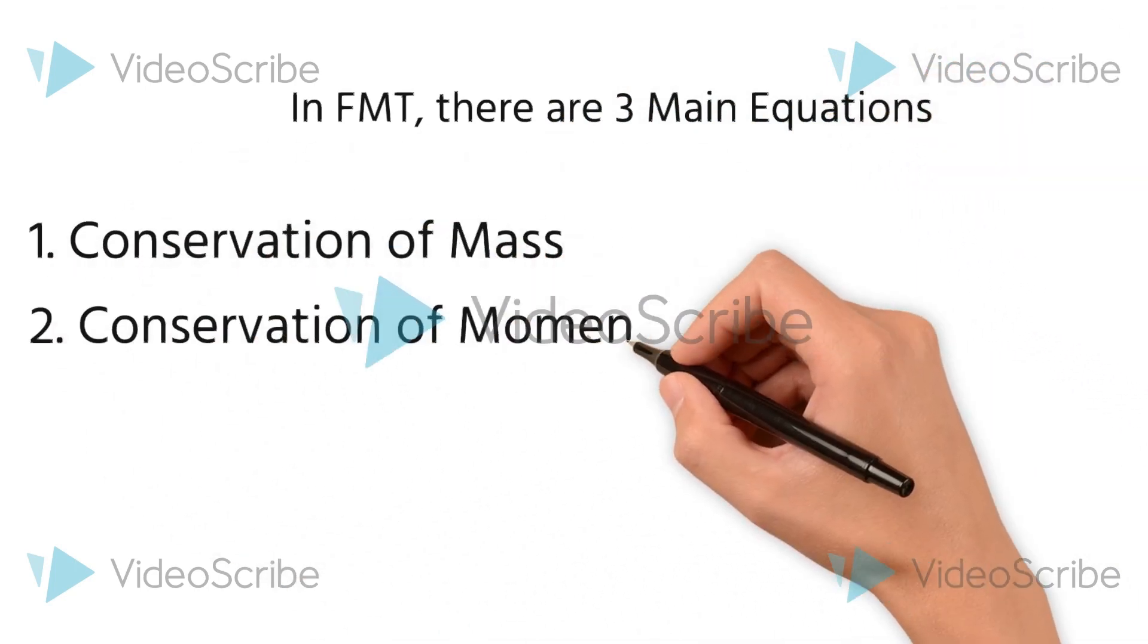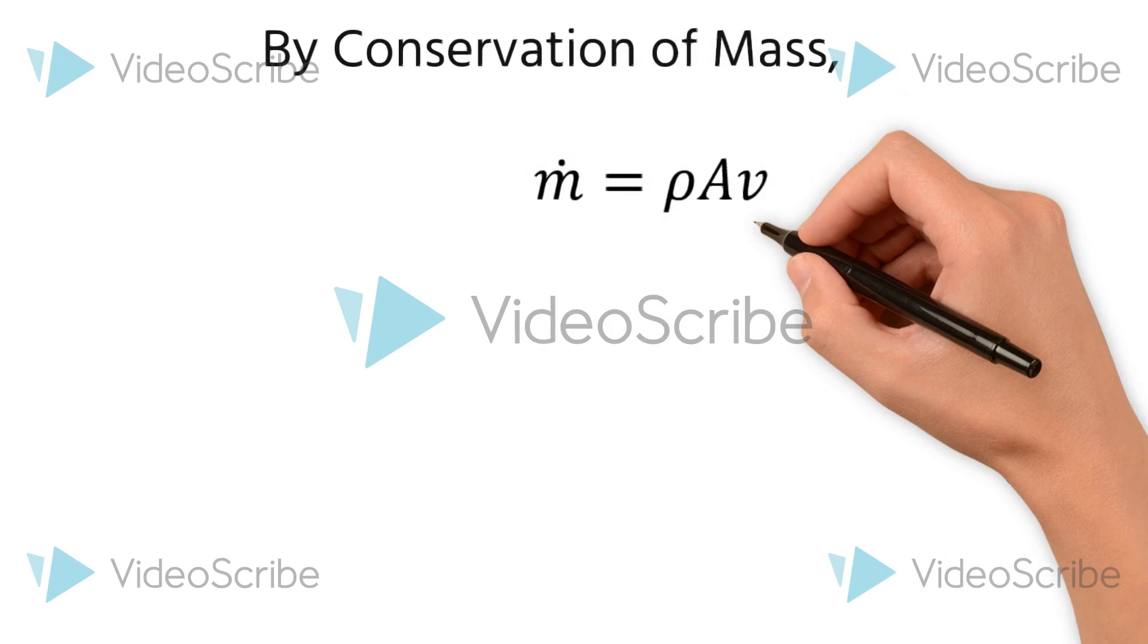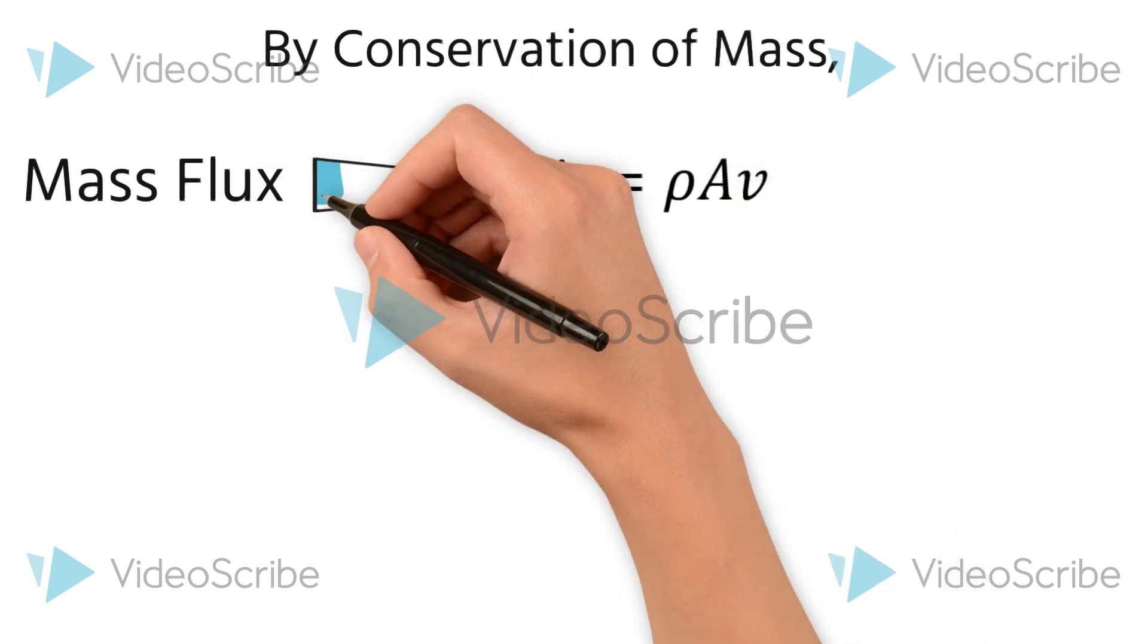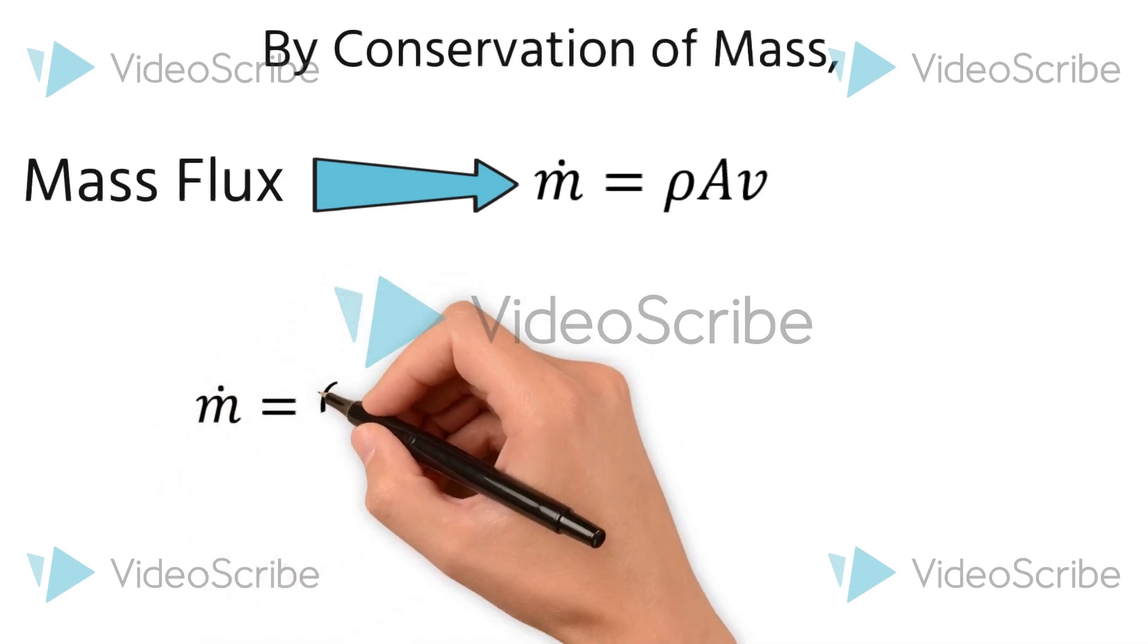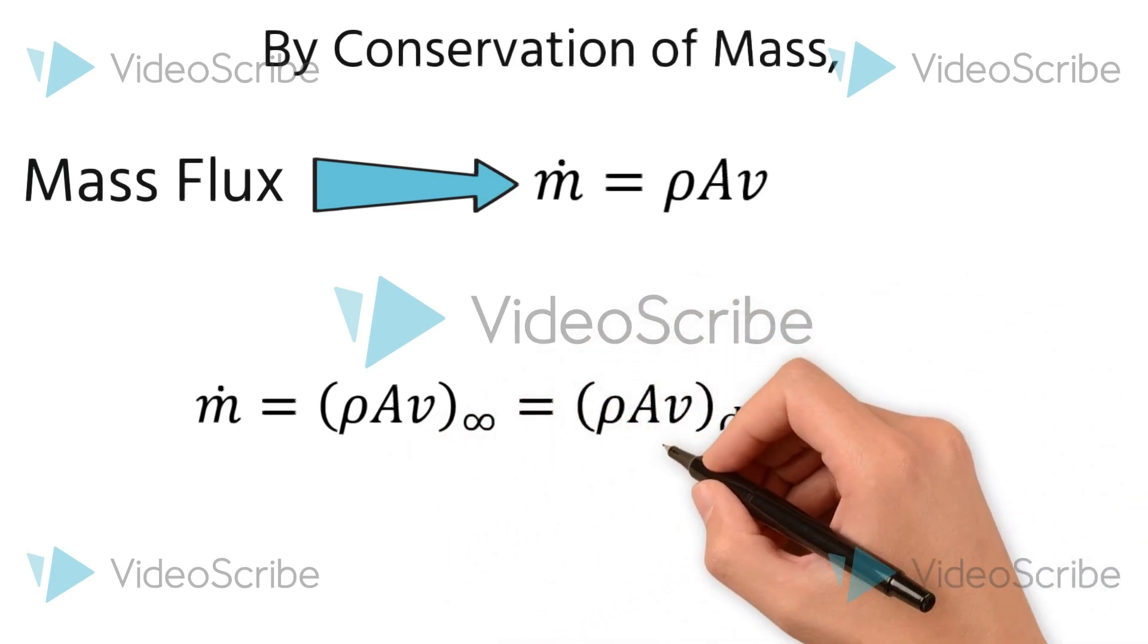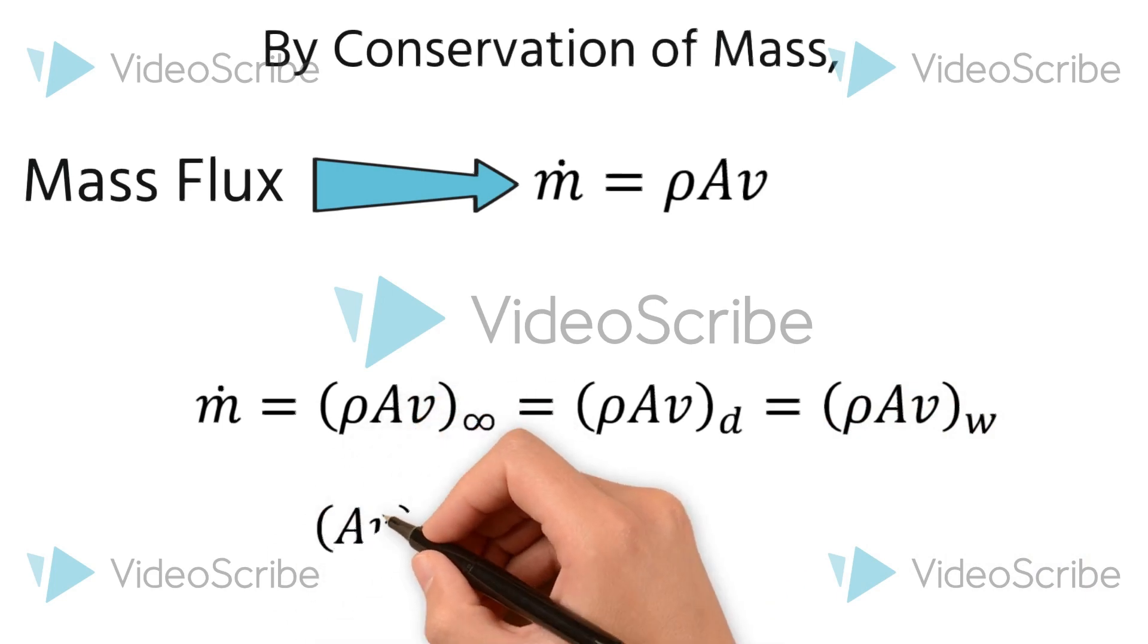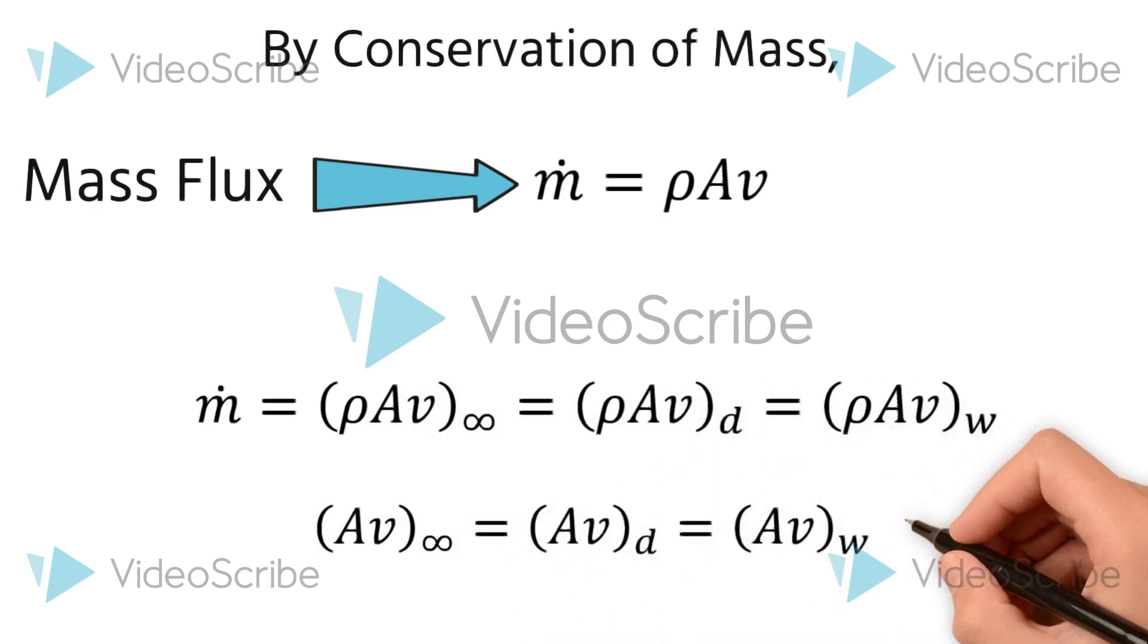Now in FMT, there are three main equations that we follow. By conservation of mass, we can say that the mass flux, denoted by ṁ, is equal to the density of the air multiplied by the area of the propeller and induced velocity. As the mass flux is constant throughout the streamtube, we can easily say that the mass flux at the upstream, the actuator disc, and the wake region are all equal to each other. We can simply write the equation by neglecting the density values as it is constant for all.